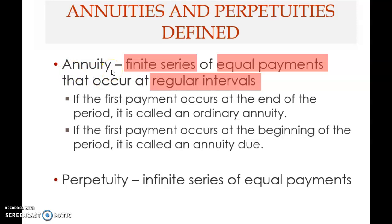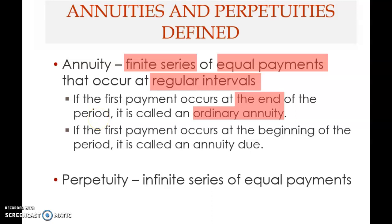There are two types of annuity. The most common is the ordinary annuity, where the equal payments occur at the end of the time period — for example, a monthly payment occurring at the end of each month.